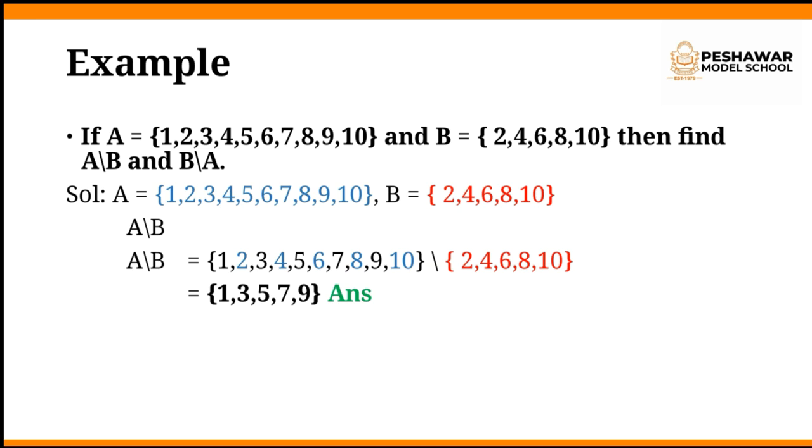You can observe that those elements which are common in both sets are colored. 2, 4, 6, 8, 10 in set A are in blue and the elements of set B are in red color. The answer is the common elements cancel each other and you write only those elements which are left behind, which are {1, 3, 5, 7, 9}.